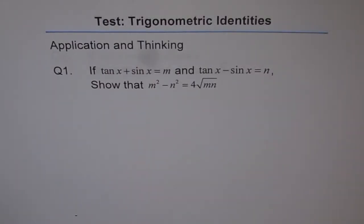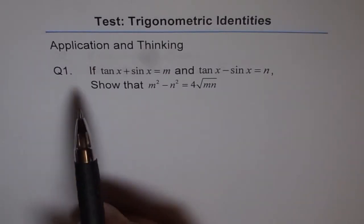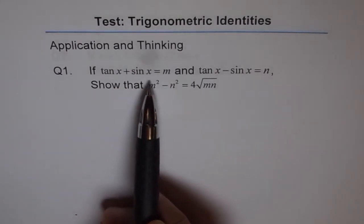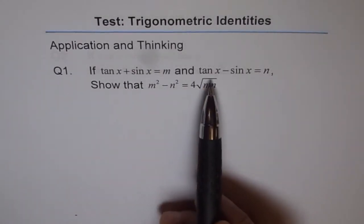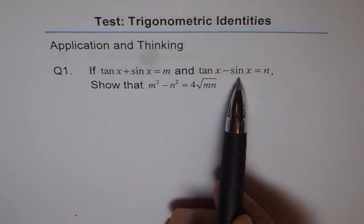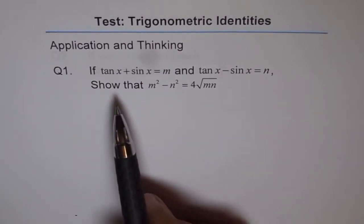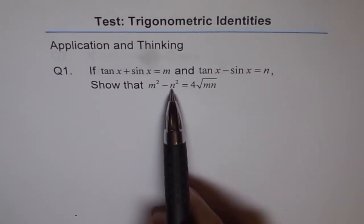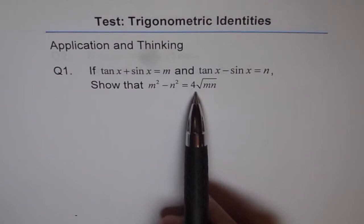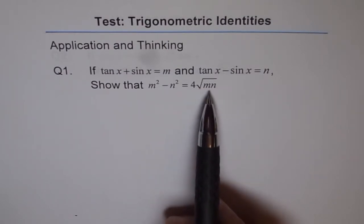Test trigonometric identities — application and thinking problem. Here we have a thinking problem. Question number one: if tan x plus sin x equals m and tan x minus sin x equals n, show that m squared minus n squared equals 4 times the square root of mn.